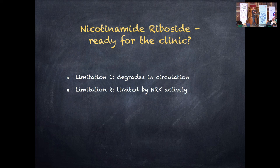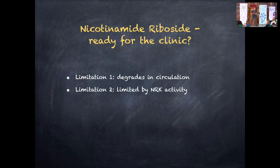The second limitation is that even if NR reaches circulation, NRK1 — which it requires — is heavily expressed in kidney and liver but relatively poorly in other tissues. So if we are targeting the brain or muscle, nicotinamide riboside may not give a selective advantage there.